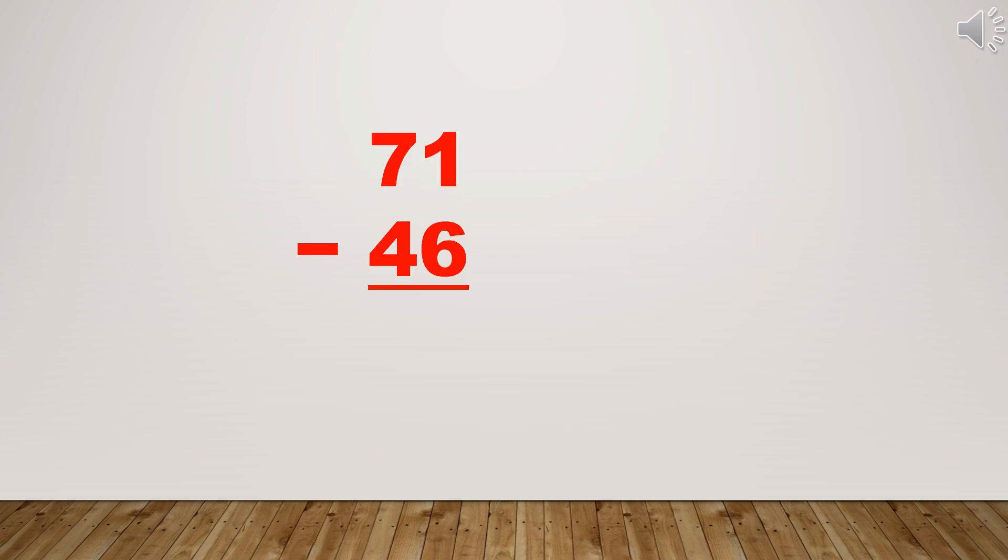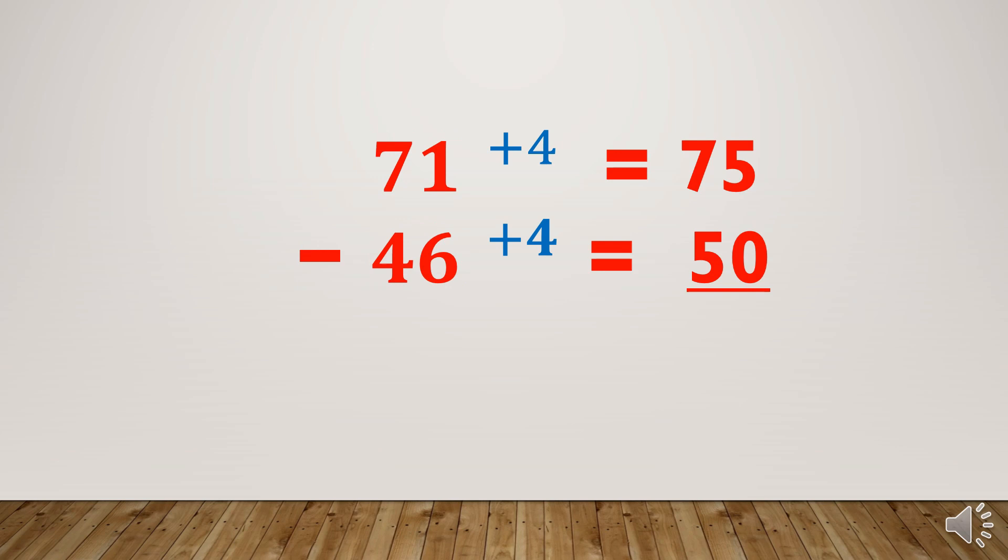Let's make our subtraction divisible by 10 by adding 4. Add 4 to 46, it will be 50. Add also 4 to 71, you have 75. So it will now be easy to subtract. 75 minus 50 is equal to 25.